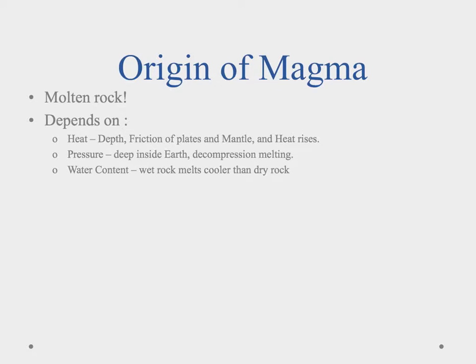Now to melt rock it requires a couple things: heat, pressure, and water content. To melt rock we require a lot of heat and we can get heat from depth. The deeper you go into the earth the warmer it gets, but it doesn't get hot enough to melt rock. So we have to add additional sources of heat, and the additional sources of heat come from the friction of the plates. As the plates are rubbing against each other it generates some heat and that'll help melt rocks.